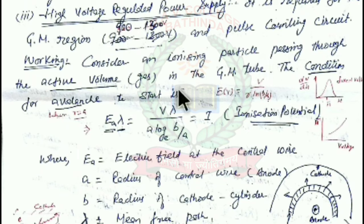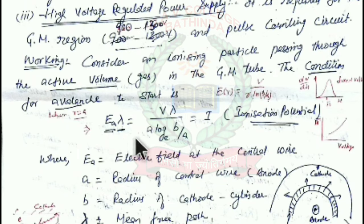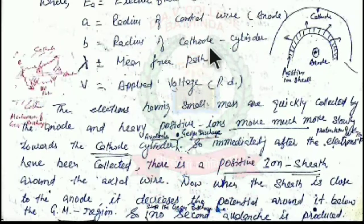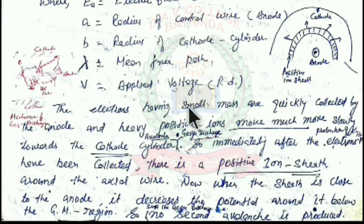For the working, consider an ionizing particle passing through the active volume of the GM tube. The condition for an avalanche to start is that the electric field E at the central wire times the mean free path λ equals V·λ divided by a·ln(b/a), where a is the radius of the central anode wire, b is the radius of the cathode cylinder, λ is the mean free path, and V is the applied voltage.